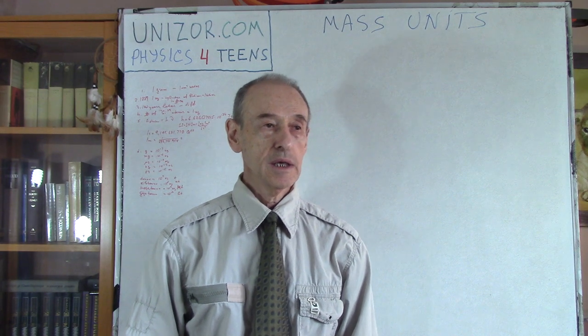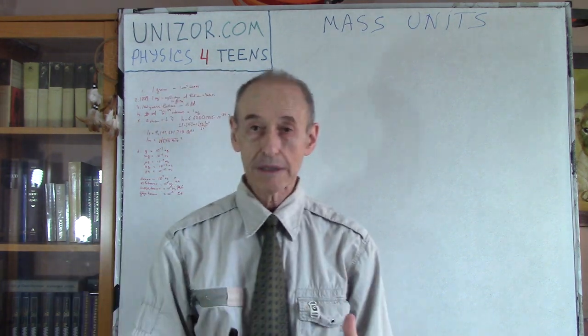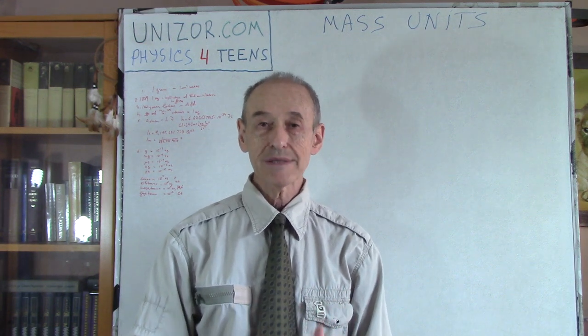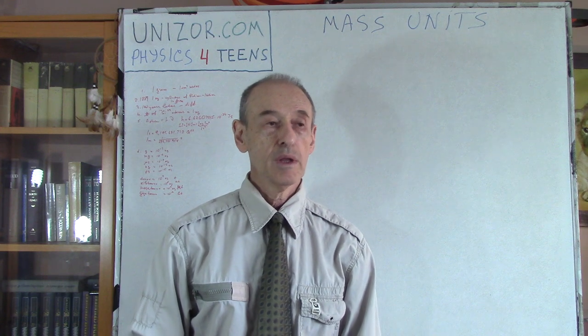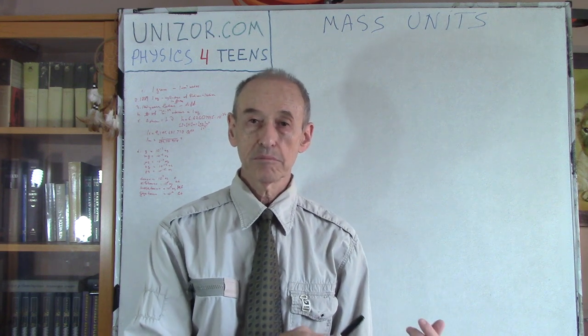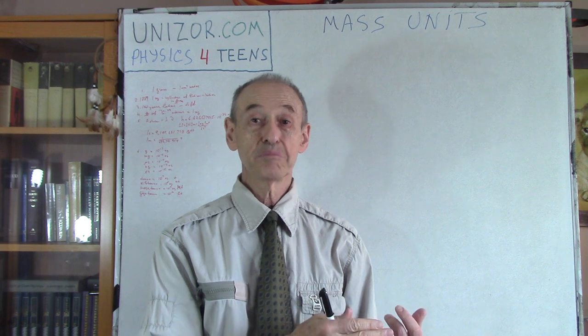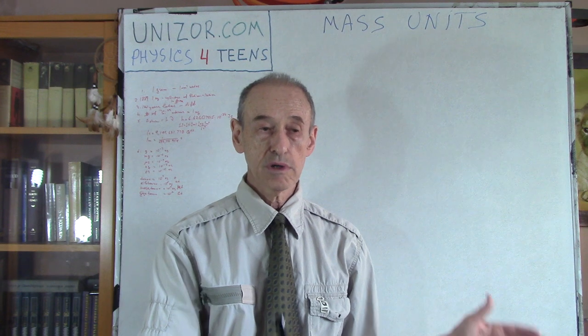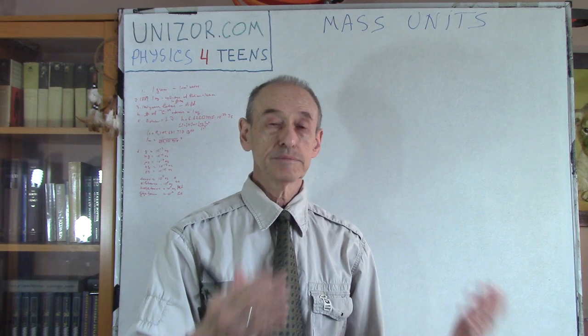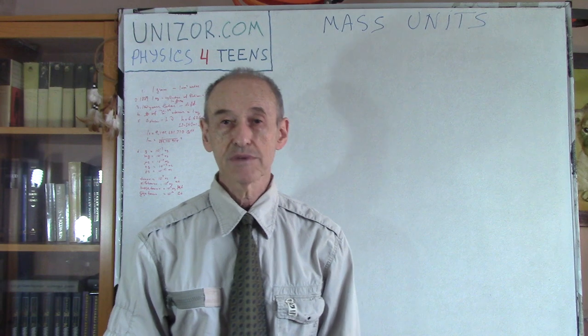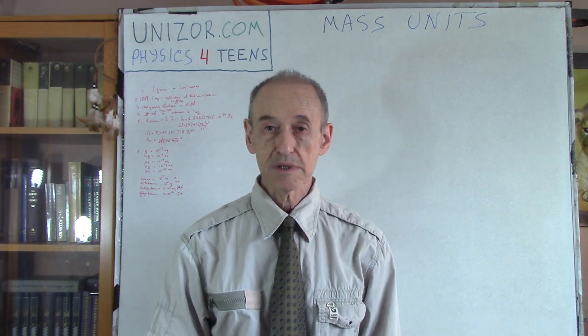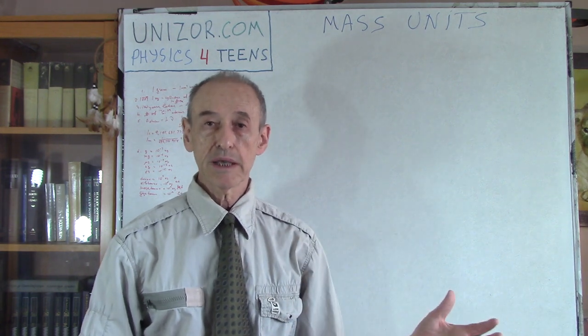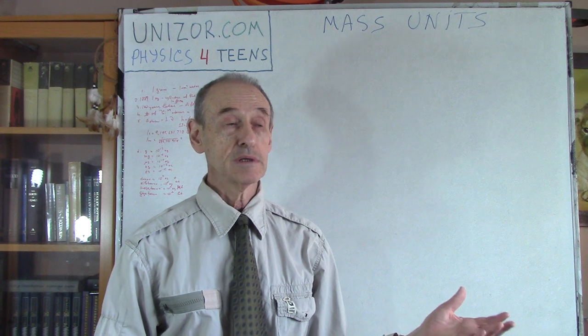So, in 1889, they have decided to make an object, a real object, which has a mass of one kilogram. And they did it. Remember how they did the measure, the unit of measurement, the meter, as a metal rod somewhere in the 19th century and put it in some laboratory? Well, later on, they have decided to get over this particular standard because it's not precise.